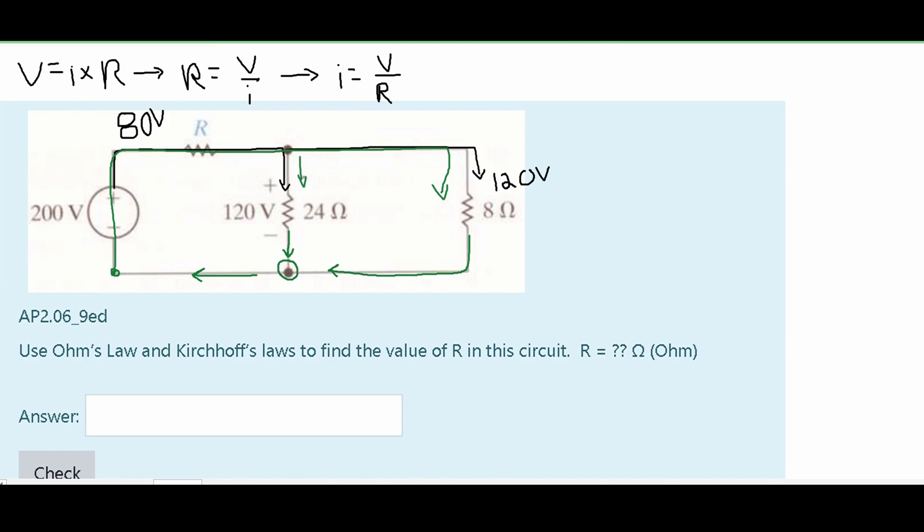But if we were to go from the right side like this and these things were facing the opposite way, I think we would get the same answer, just our equation will be backwards. So drawing this, we're going to use Kirchhoff's current law. Again, it's that the sum of all currents at a node is equal to zero.